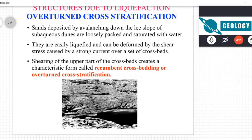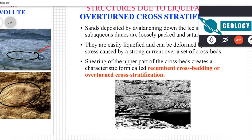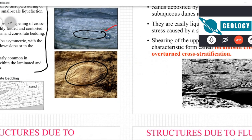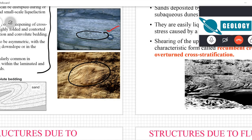Another thing that can happen is that you can get overturned strata. Normally at the bottom you will have older strata and near the top you will have younger strata. But if you follow the top bed and the older bed, what happens is this older bed is doing something like this — it gets overturned.